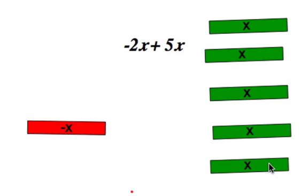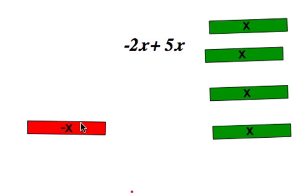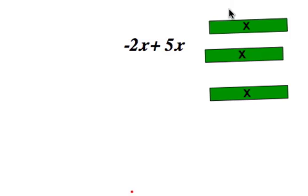So that one will cancel out, that one, this negative x will cancel out this negative x, and we're left with positive 3x. And so what that means is that negative 2x plus 5x is equal to 3x.